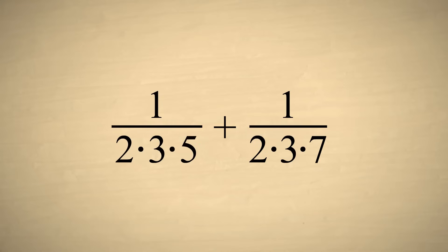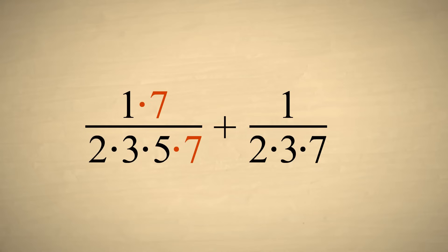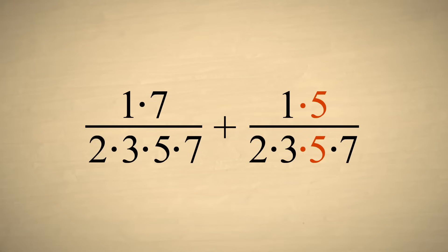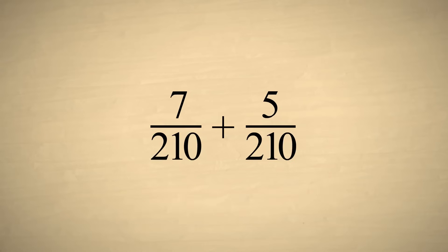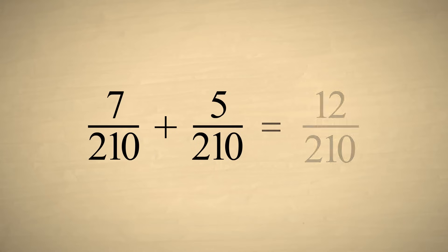So we multiply the top and bottom of the first fraction by seven, and the top and the bottom of the second fraction by five. The two fractions now have a least common denominator of two hundred ten, and we can now add their numerators.